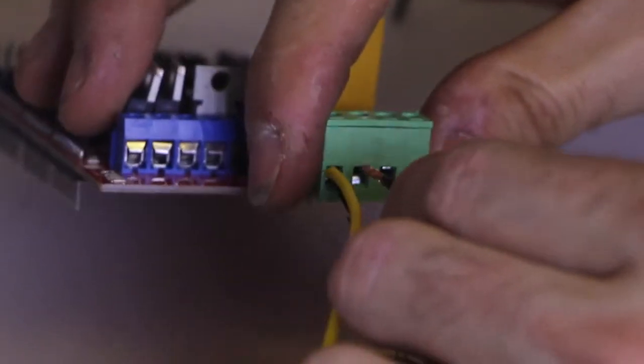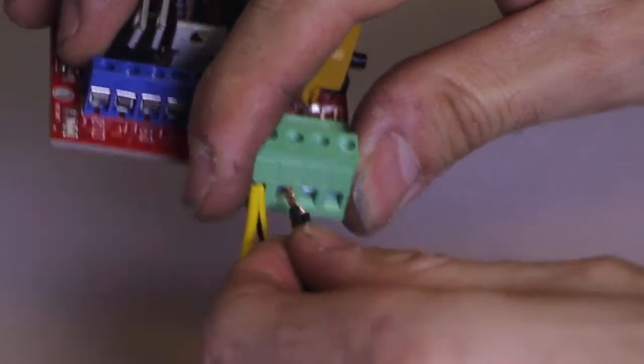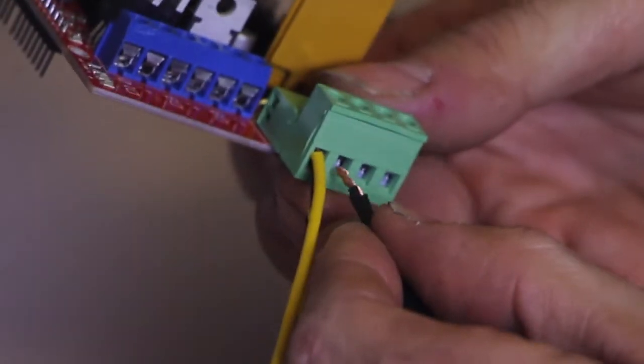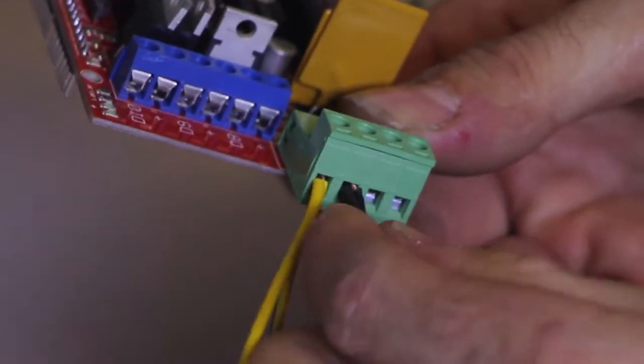The same for the black. Again you can see it's too long. Let's take a few mils off. Another thing you shouldn't do is tin it. You shouldn't solder this or put solder on it. It should just be bare copper.